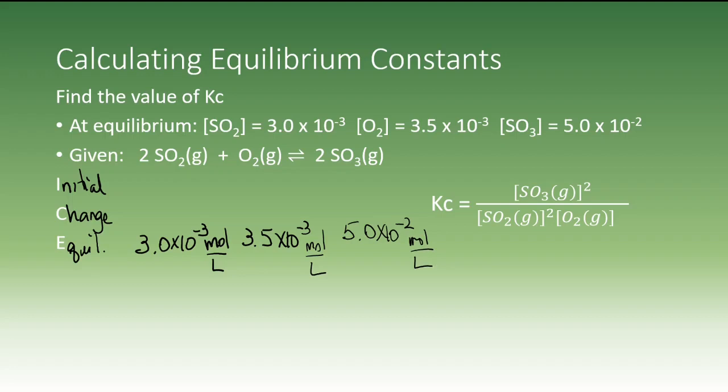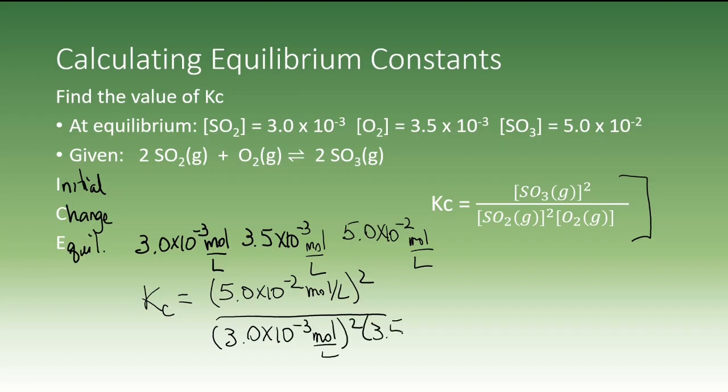So what we would do in this case is we would require all of the information that we substitute into our equilibrium law expression to be the values of the system at equilibrium. And since those are all given to us, this is actually a really easy question. All we have to do at this point is to substitute all the information into our law. And then this just has to be input into a calculator and a value calculated. So in this case, we get 7.9 times 10 to the fourth.